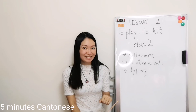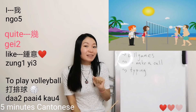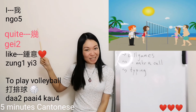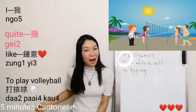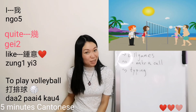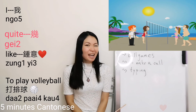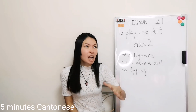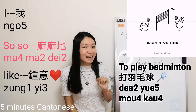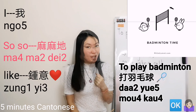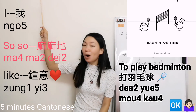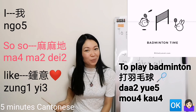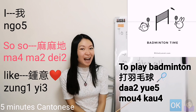Now, a lower level — quite like. For example, I quite like playing volleyball: 我幾喜歡打排球. 我幾喜歡打排球. How to say so-so — I don't really like playing badminton but it's okay, I don't hate it: 我冇乜地喜歡打羽毛球.